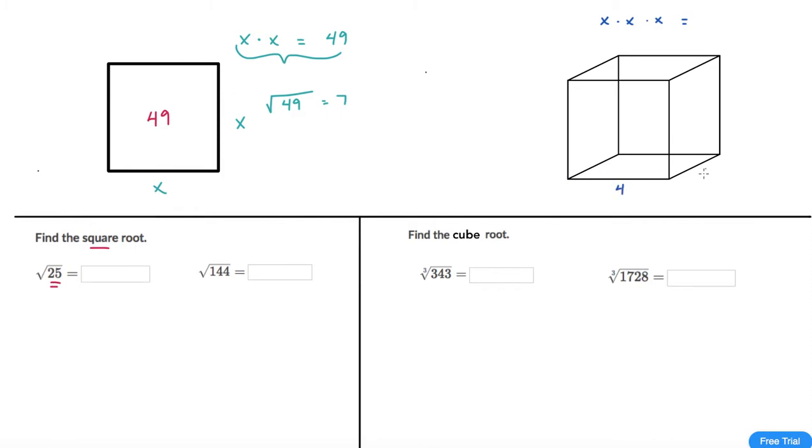So suppose we have the number 4. So if we have 4, 4, and 4 and if we multiply these three things together we would get 64. So that's the volume of this cube.